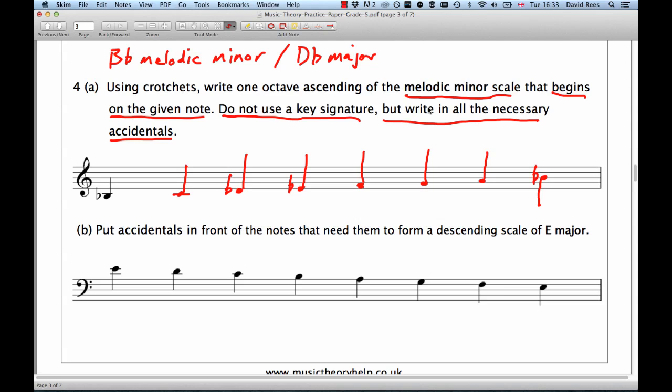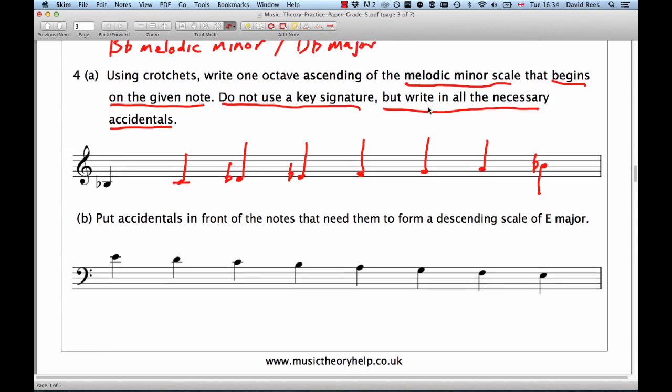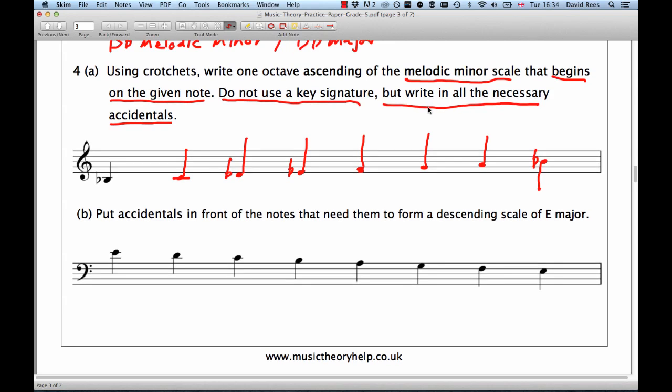That's what B♭ melodic minor looks like. I've done one octave ascending, and I've not used a key signature, but I've written in the various flats that I need to make this scale work. So that part of the question is done. And all we have to do for this second one... Ah, easy!